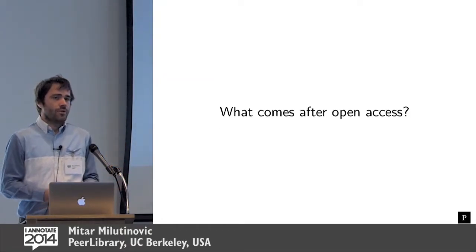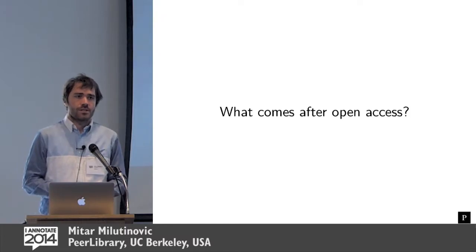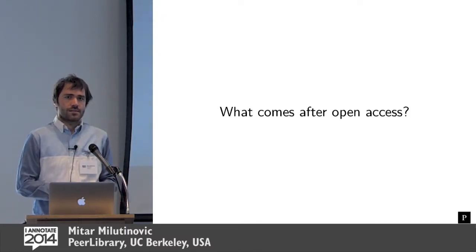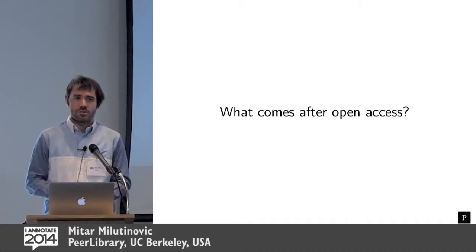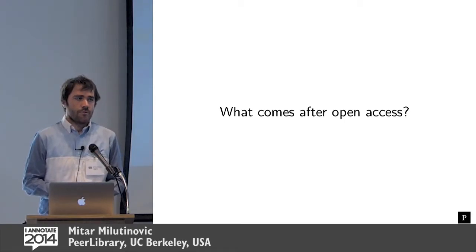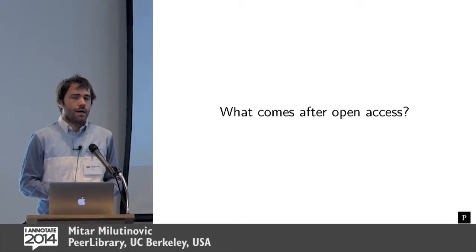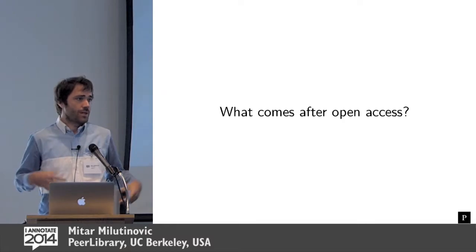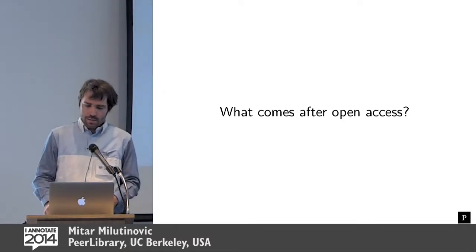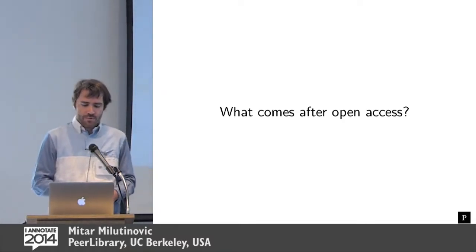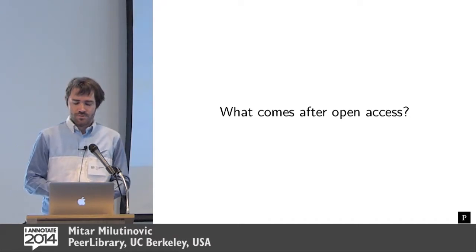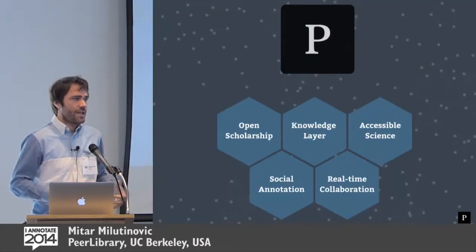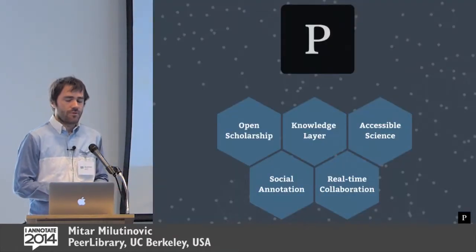What we are also trying to answer is: what will come after open access? If we manage to get all publications open access, we are trying to create a tool to answer the next questions — what can we do then? Peer Library tries to combine different parts and different answers to this question.